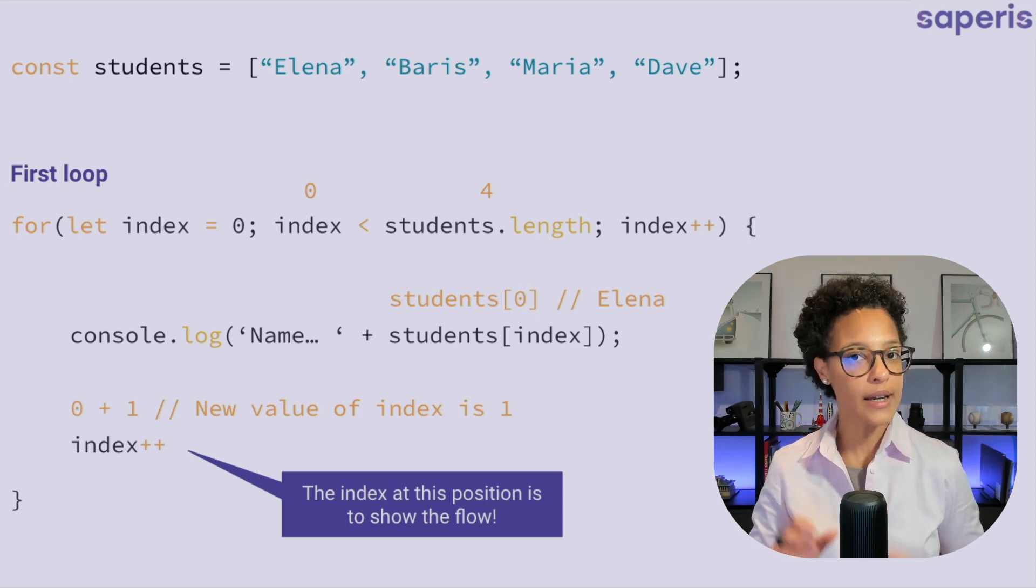Now counter index currently has the value of zero. That means that we're going to use students index zero. That equals Elena in this case. And we're going to log that out.